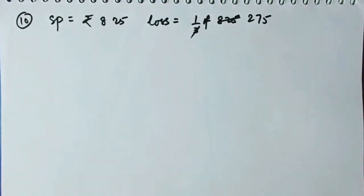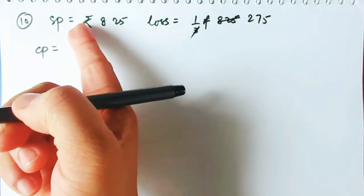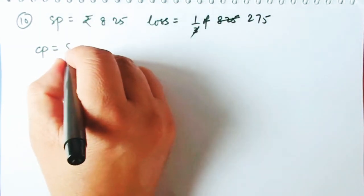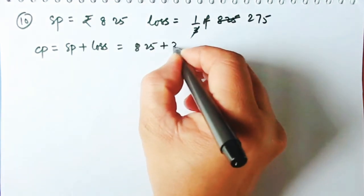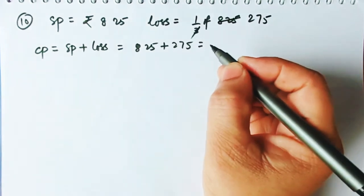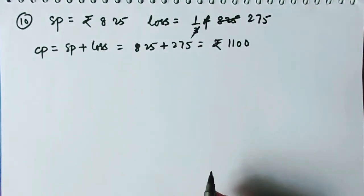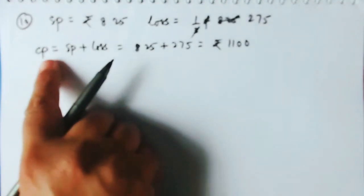We need to find the cost price. Since there is a loss, the cost price is more than the selling price. So CP = SP + loss = ₹825 + ₹275 = ₹1100.